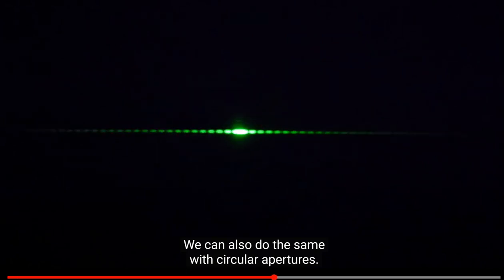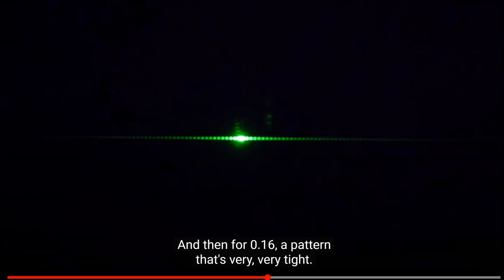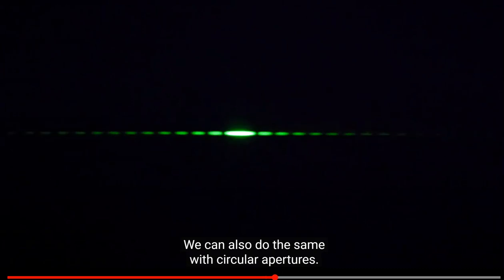Also do the same with circular—now by the way, really fast, as he was flipping the dial, he was changing back through... Sorry, let me get this toy. He was flipping back through those single slits. So just watch that really quick again. This is where he got to the widest slit, but he has to flip back through them to get to the circular aperture. So I'm just rewinding it to watch that part again. We can also do the same with circular apertures.